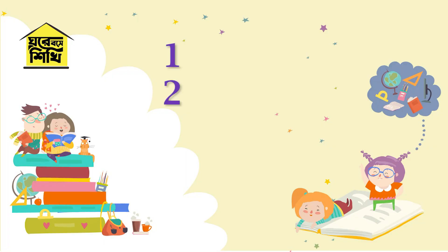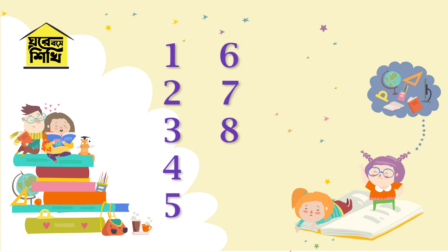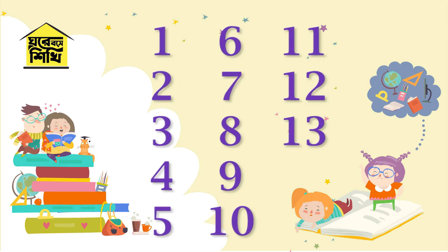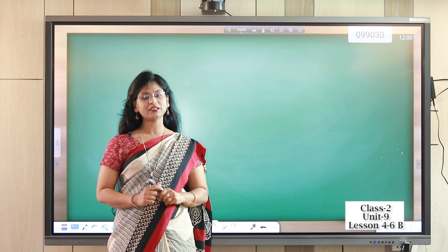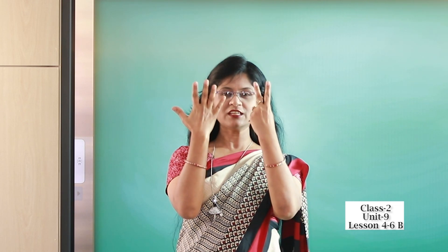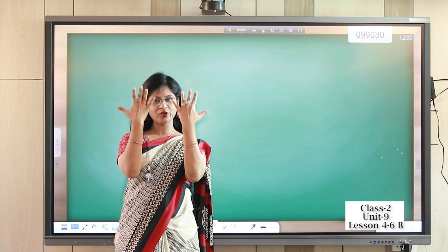One, two, three, four, five, six, seven, eight, nine, ten. In our previous class we learned about numbers. Let's count the numbers again: one, two, three, four, five, six, seven, eight, nine, ten.